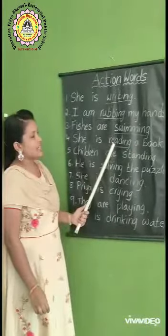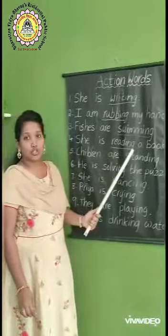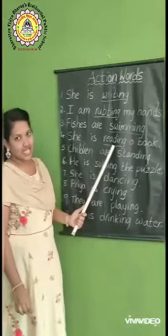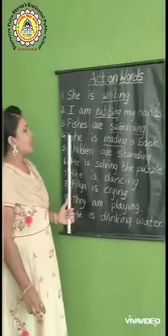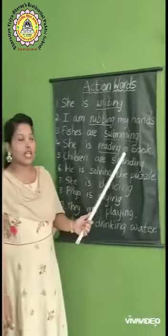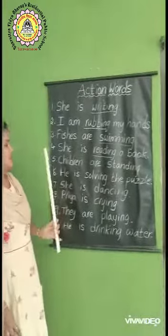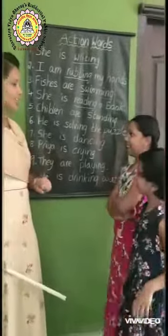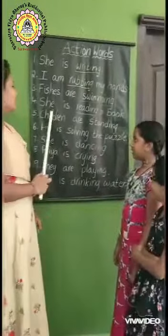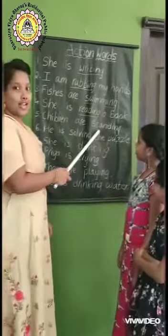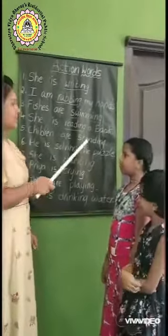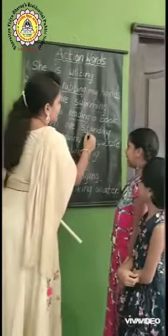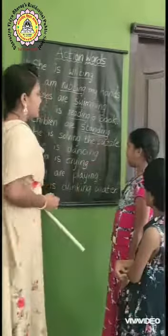R-E-A-D-I-N-G. She is reading a book. Okay children, please stand up. What are you doing? I am standing. Very good. So, children are standing. What is the action word here? Standing. So, do underline standing.